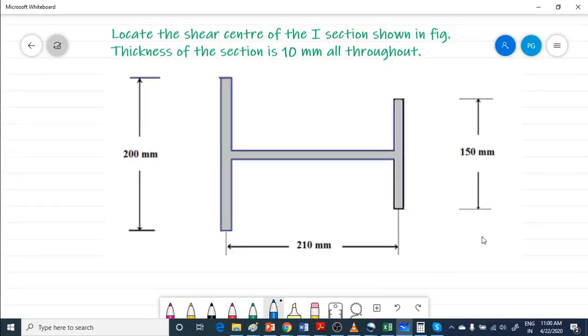The center of the I section shown in figure, given that the thickness of the section is 10 millimeter all throughout. We can see the given I section is symmetrical with respect to x-axis. The left vertical leg has a height of 200 mm, right one has 150 mm, and the distance between these two legs center to center is 210 millimeters, and 10 mm is the thickness all throughout.